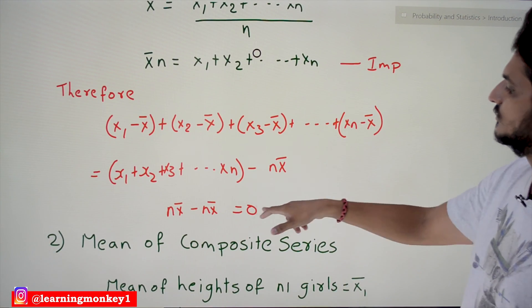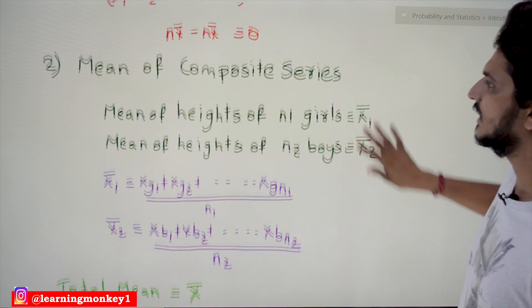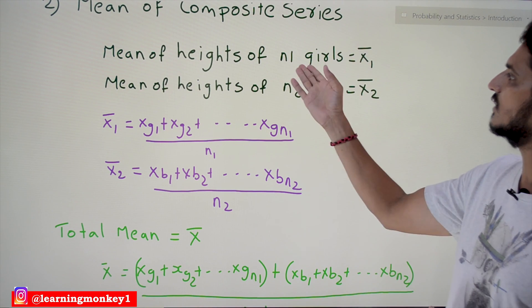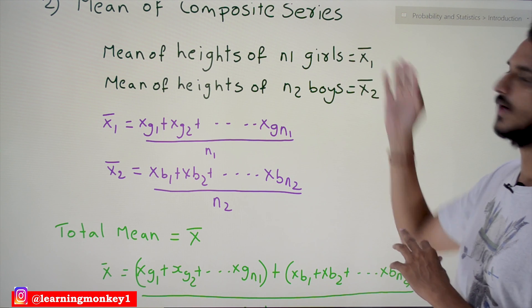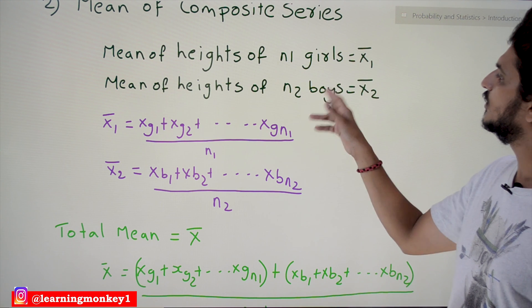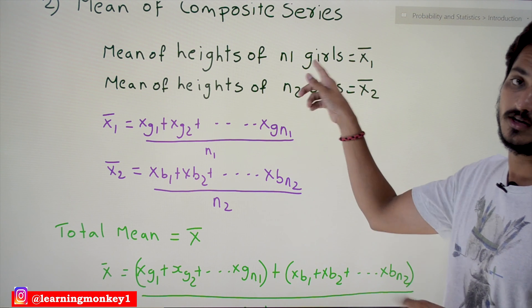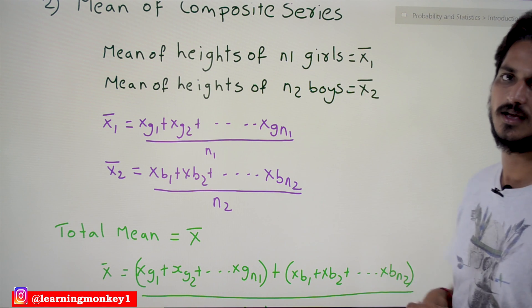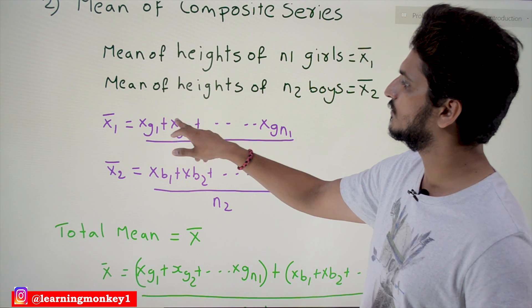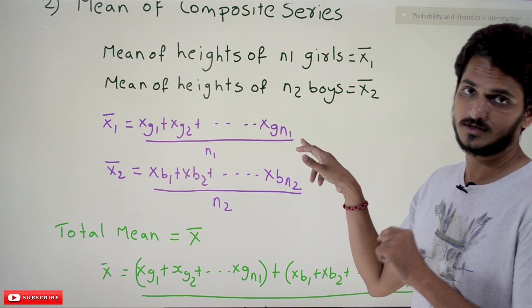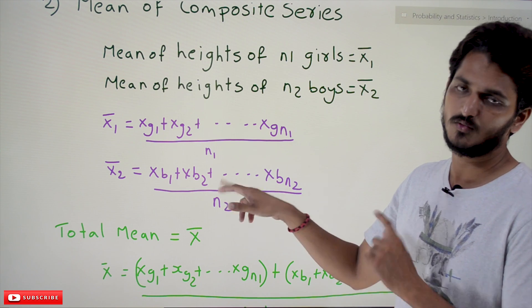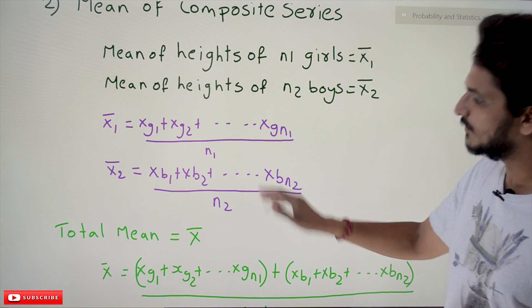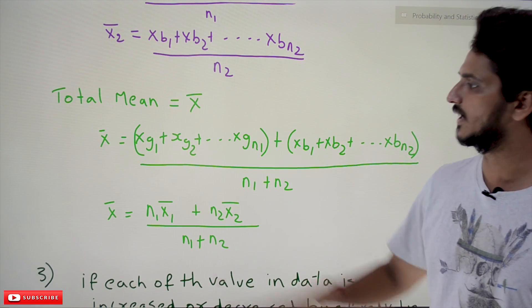Coming to the second property — mean of a composite series. Suppose the mean height of n1 girl students is x̄1, and the mean height of n2 boy students is x̄2. So x̄1 = (xg1 + xg2 + ... + xgn1) / n1, and x̄2 = (xb1 + xb2 + ... + xbn2) / n2.